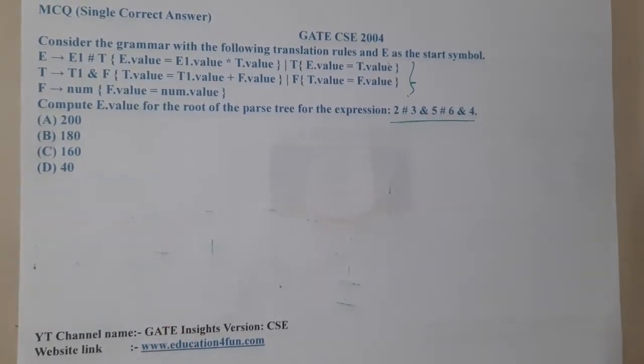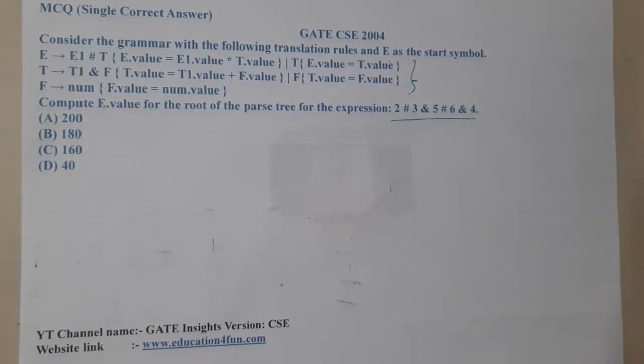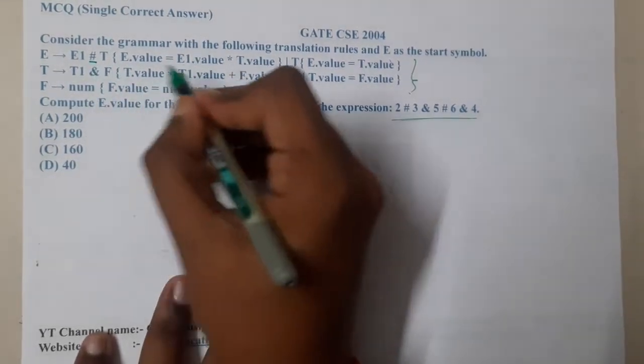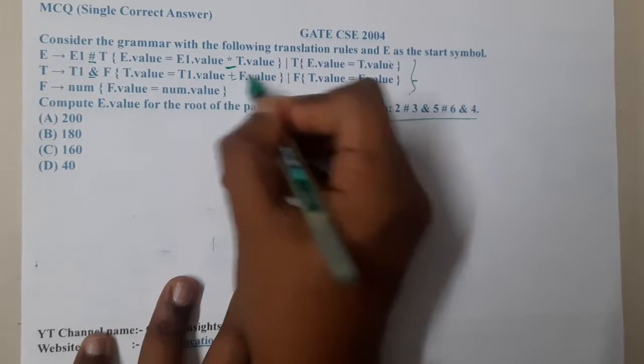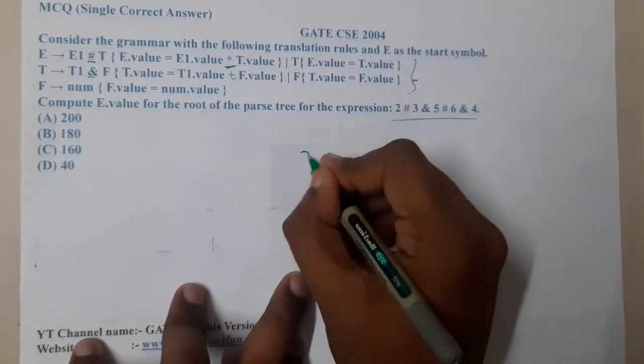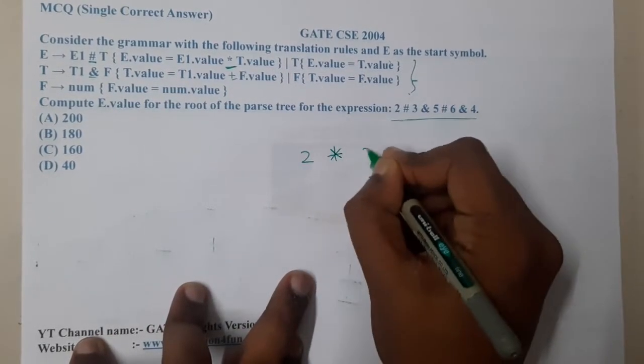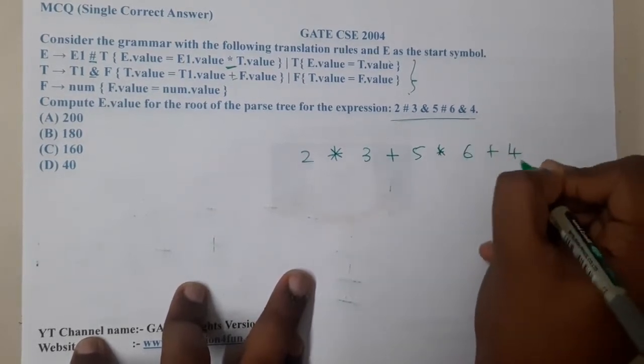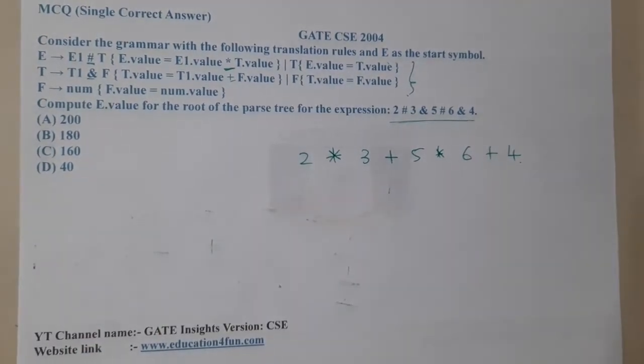Rather than understanding with ash and and, let us understand what are those symbols. Ash means multiplication and and means plus, so let us convert this first. It is 2 into 3 plus 5 into 6 plus 4.